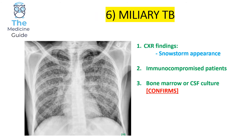This is an example of miliary TB. The chest x-ray finding of miliary TB describes the classical snowstorm appearance. Miliary TB occurs when a TB granuloma erodes a blood vessel or lymphatic vessel, causing the TB to disseminate and spread systemically. Patients at risk include immunocompromised individuals such as those with AIDS or current leukaemia. The confirmatory diagnosis involves either bone marrow or CSF culture.